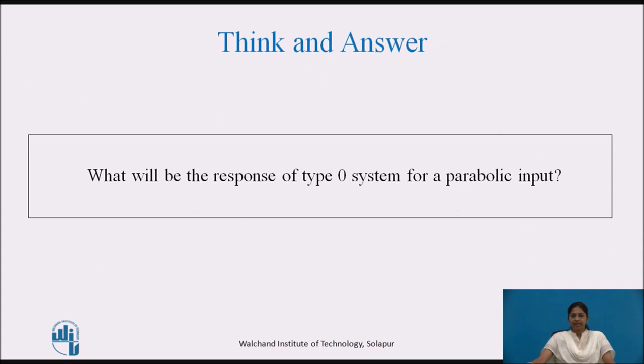Try to think and answer: what will be the response of a Type 0 system for a parabolic input? Pause the video for some time and note down the answer in your book.